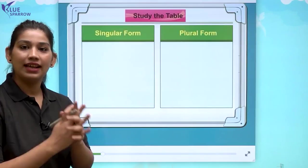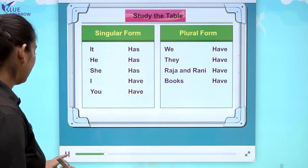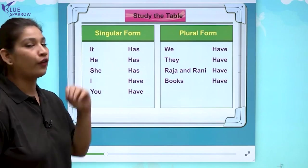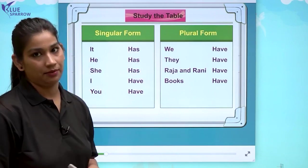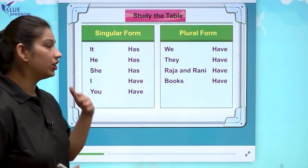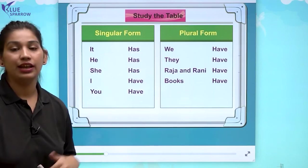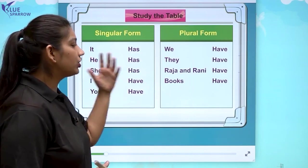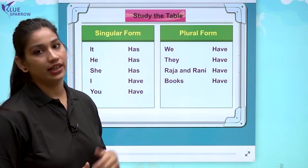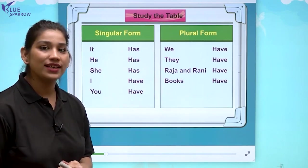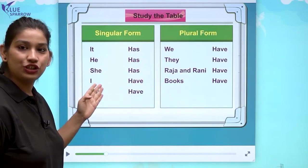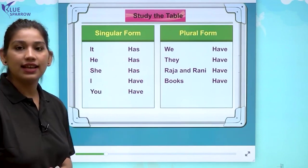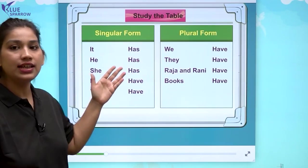Let us understand the whole concept through a video. Let's see the table. Here in the table you can see the singular form and the plural form. Singular form matlab one in number. Singular form mein he, she aur it aata hai — aur koi bhi aisi object jo one in number hai. Un ke saath hum has use karte hai. He has, she has — un ke saath hum has ka use kareenge because they are in singular form.